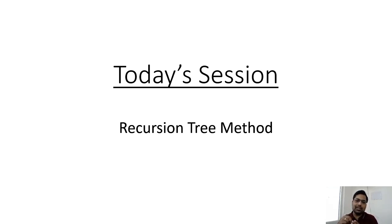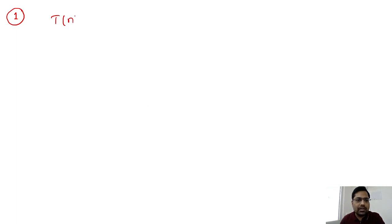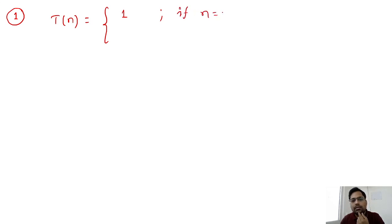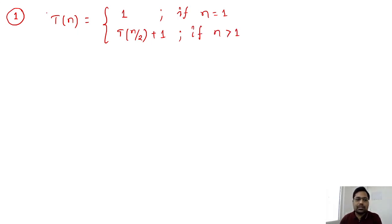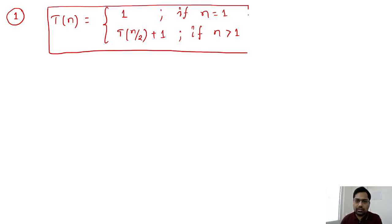Let us start with a very simple question. Suppose T(n) is given as 1 where n equals 1 — that is the base condition — and T(n/2) + 1 if n is greater than 1. This is the question given to you, and what you have to do is solve this recurrence relation using the recursion tree method.